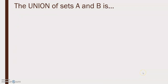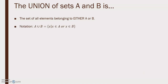The union of sets A and B is the set of all elements belonging to either A or B. The notation is A union B. The union symbol looks like the letter U, and it's the set of x values such that x is an element of A or x is an element of B.